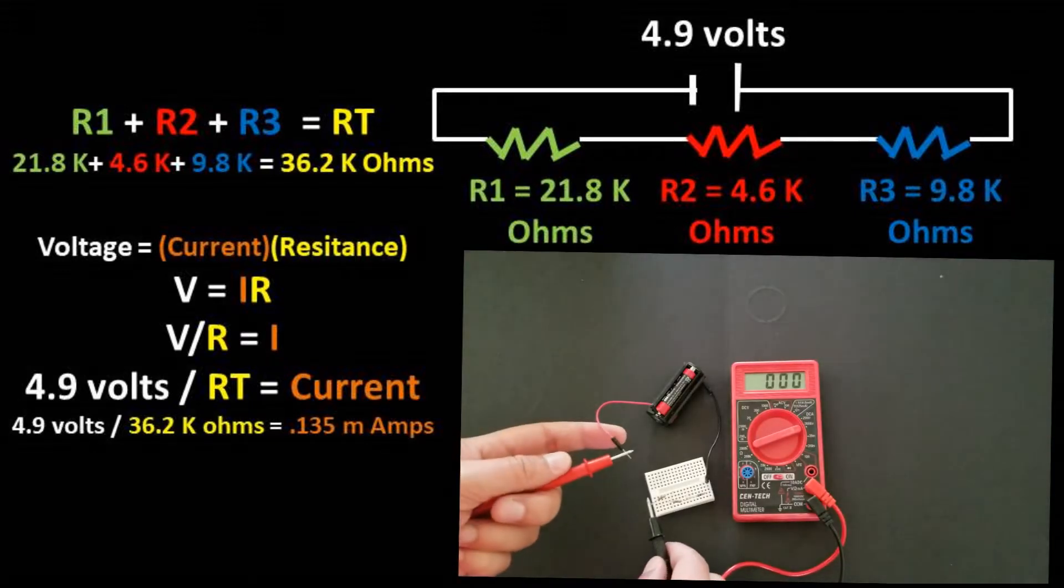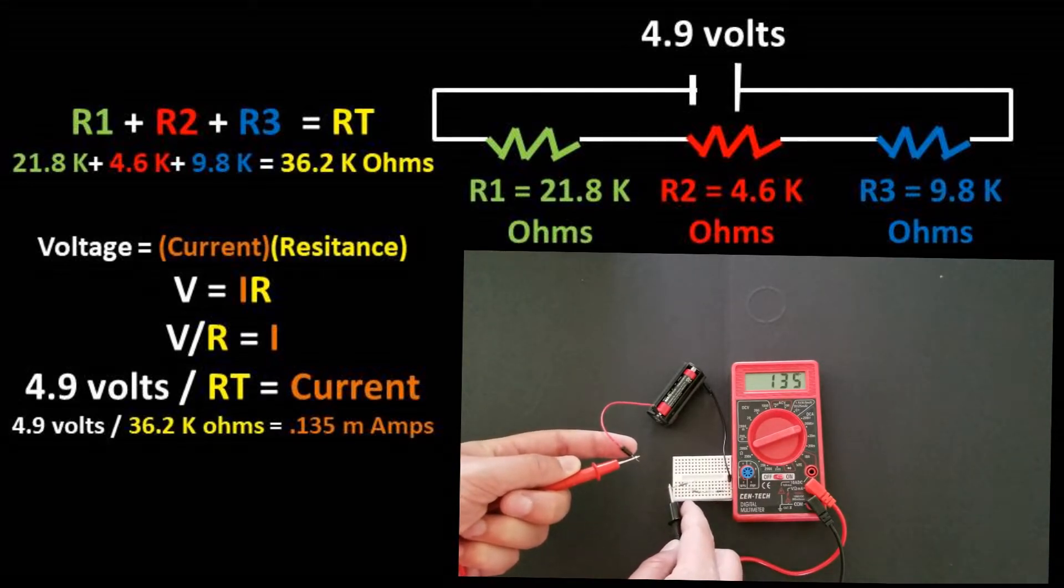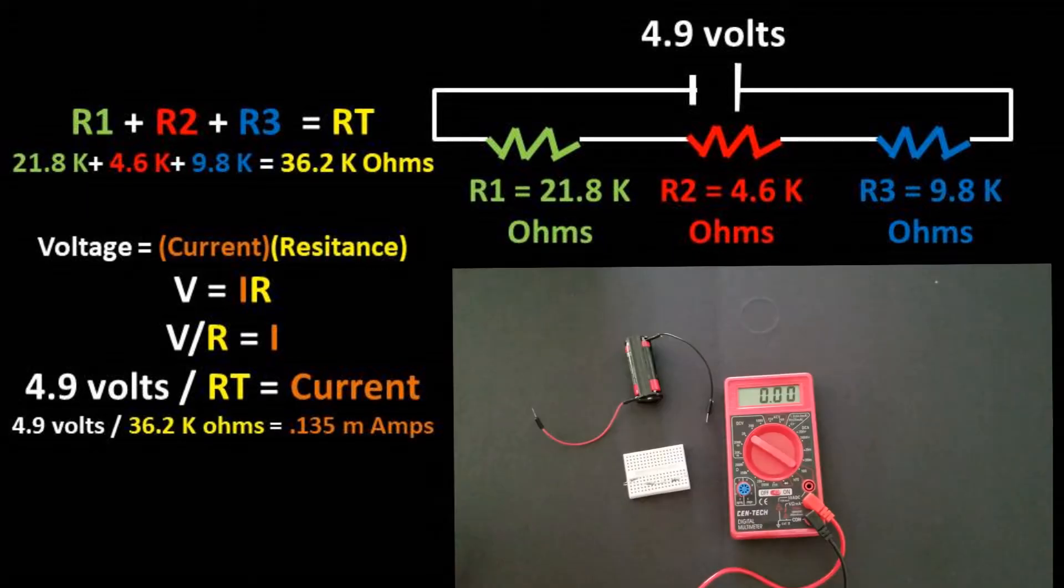We can take a current reading in the circuit by breaking the circuit and putting the voltmeter, which is acting as an amp meter, in the circuit in series. We get close to the calculated value. In a series circuit, the total current goes through each resistor.